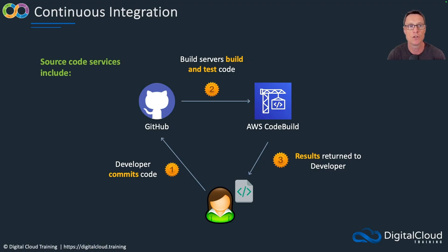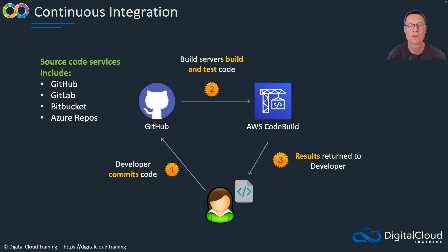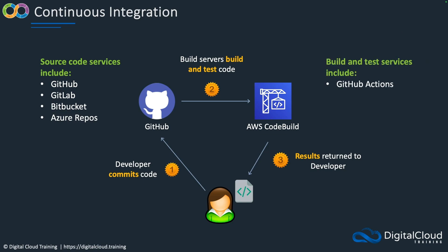Some of the services you can use for storing your source code include GitHub — which is what we'll use in our labs — as well as GitLab, Bitbucket, and Azure Repos, just as a few examples. Build and test services include GitHub Actions, GitLab CI/CD, Bitbucket Pipelines, AWS CodeBuild, and Jenkins.